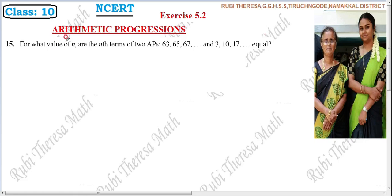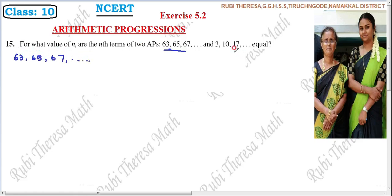For what value of N are the Nth terms of these two APs equal? So, for what value of N are the Nth terms of two APs equal? What is given? Two AP sequences are given. First of all, identify the total question before proceeding. So, what is the basic data given in the question? We have two AP sequences.